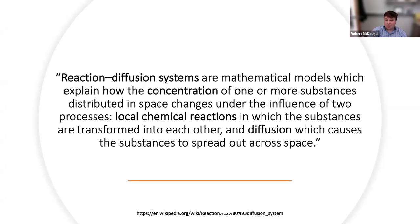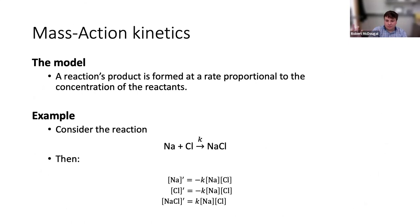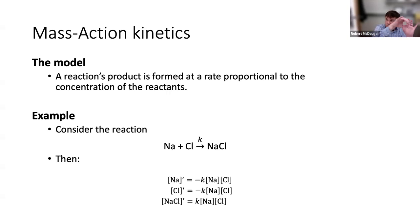A reaction-diffusion system is a mathematical model where things react and diffuse — which is exactly what chemicals do. They move around and sometimes bump into each other, causing reactions. The simplest way to represent kinetics is mass action kinetics: if you have twice as many of one molecule, it's twice as likely to bump into another, so the reaction rate is proportional to concentration. Doubling the amount means twice the reaction rate, and you can write differential equations for all of that.